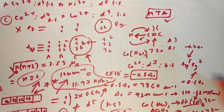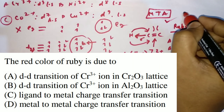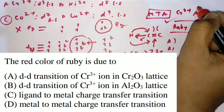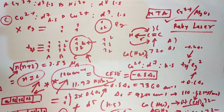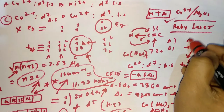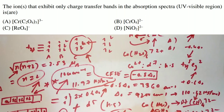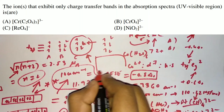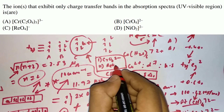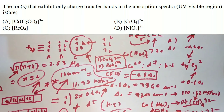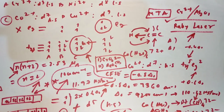The next question was about the red color of ruby. Ruby generally consists of Cr³⁺ in Al2O3. The final answer is option B. You will find this in RPS Volume 2. The following question asks which ions exhibit only charge transfer bands — the answer includes CrO4²⁻ and ReO4⁻. You will also find charge transfer spectra with great explanation in RPS Volume 2.